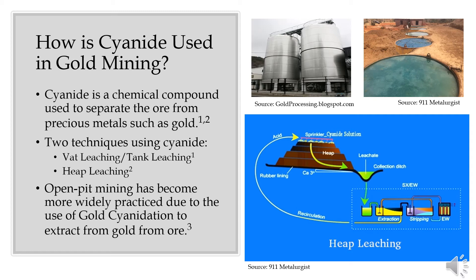Due to cyanide's success in leaching gold from low-grade ore, this technique has created a boom in open-pit mining. The practice is often criticized for the amount of waste created compared to the amount of gold produced. For example, Nevada's Carlin Trend mine mined 129.8 million tons of ore in 1989 and recovered just 3.7 million ounces of gold.